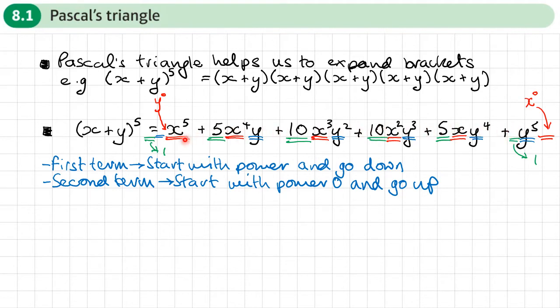Pascal's triangle is a very easy triangle to produce and we can use it to get these coefficients. The name comes from a French mathematician called Blaise Pascal. Not only was he a mathematician, he was also an inventor, philosopher, writer, physicist, and a Catholic theologian — so he had lots of things that he did.